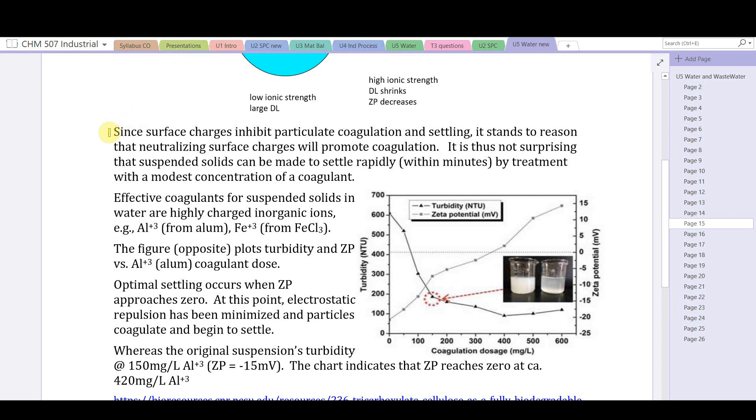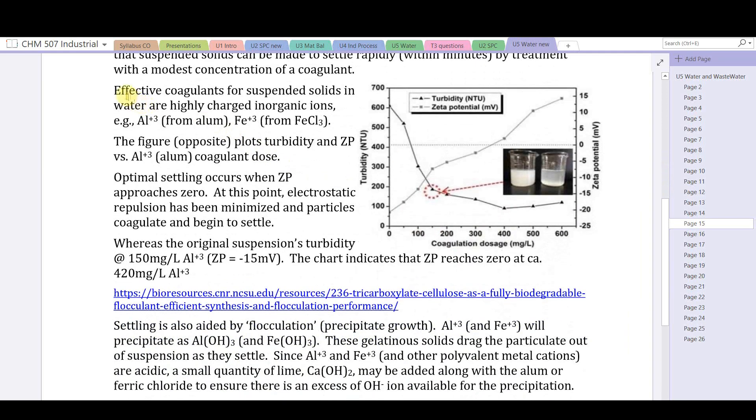We're not going to do any calculations with zeta potential, but I want you to appreciate the values of zeta potential that will give optimized settling. Since surface charges inhibit particulate coagulation and settling, it stands to reason that neutralizing surface charges would promote coagulation. It's not surprising that suspended solids can be made to settle rapidly within minutes by treatment with a modest concentration of a coagulant. Effective coagulants for suspended solids in water are highly charged inorganic ions like aluminum ion or ferric ion.